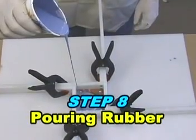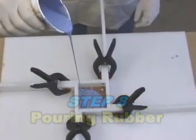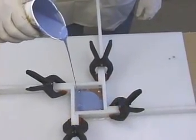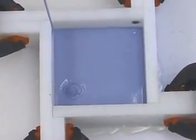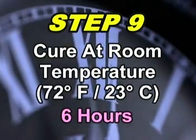The rubber is then poured in a slow steady stream at the lowest point in the mold box and allowed to rise over and above the model. The rubber cures at room temperature in about 6 hours and is ready for de-molding.